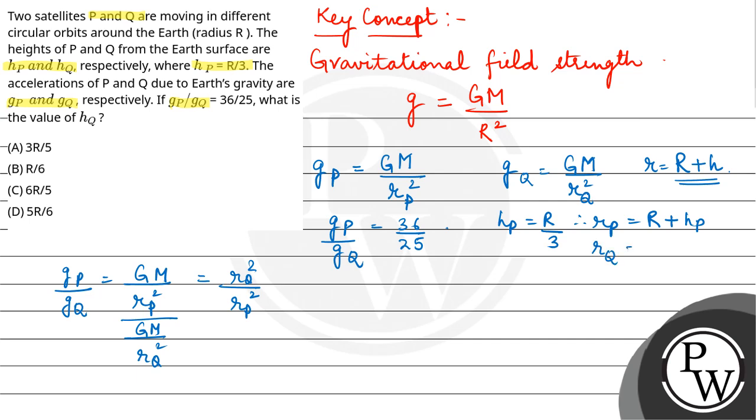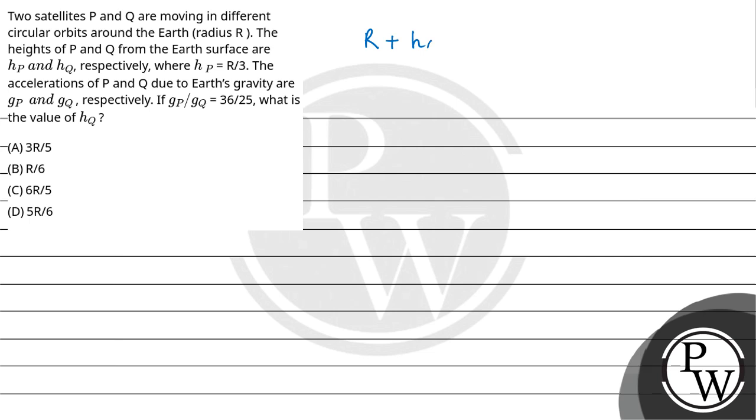So RP is equal to R plus HP. So GP upon GQ, we put the value: RQ which is radius of earth plus HQ upon radius of earth plus HP, all squared, is equal to 36 by 25. So we have the relation R plus HQ upon R plus HP squared is equal to 36 by 25. That means R plus HQ upon R plus HP is equal to 6 by 5. Now cross multiply: 5R plus 5HQ is equal to 6R plus 6HP.